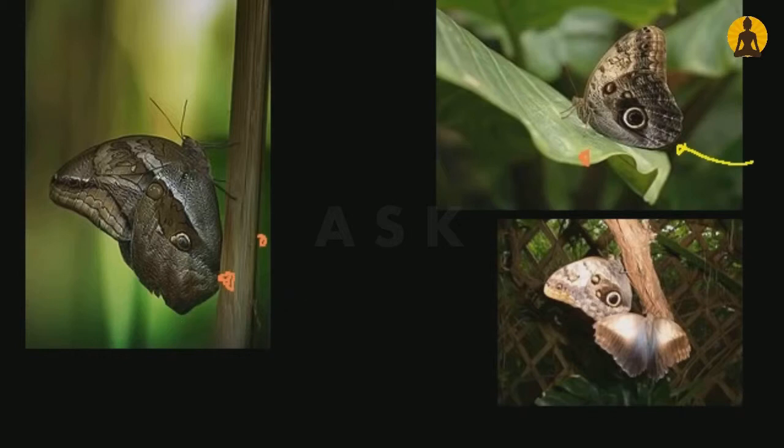One theory is that this, even though to us humans, the way we see things, it looks like an owl's eye, that this is actually a decoy. That when some predator is about to chase these, wants to eat one of these things...